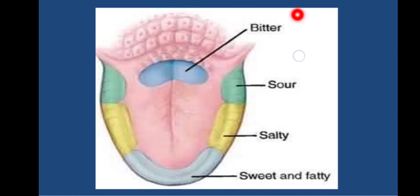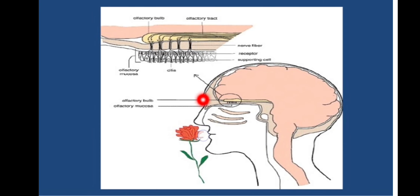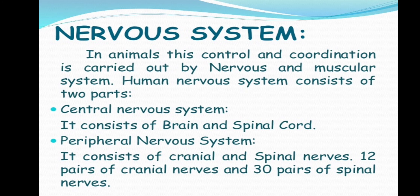We have talked about gustatory receptors which help us to detect taste. This is a diagram of the tongue showing receptors for bitter, sour, salty, and sweet tastes, which help determine how any food item tastes. Olfactory receptors are present in the nose, and this information goes to the brain — specifically the olfactory lobe in the brain — which receives the information and helps us detect smell, telling us which flower or food item the smell belongs to by relating it to already stored information. Control and coordination in animals is carried out by the nervous system.